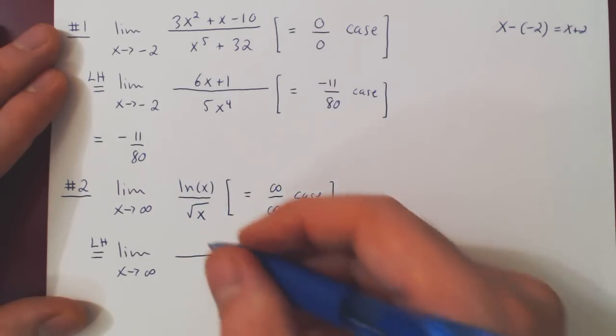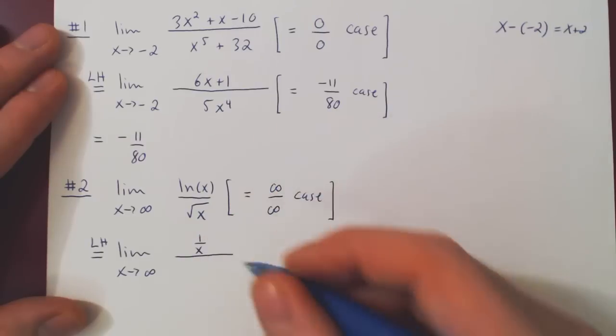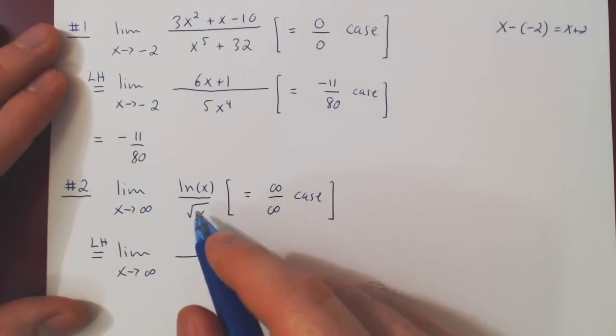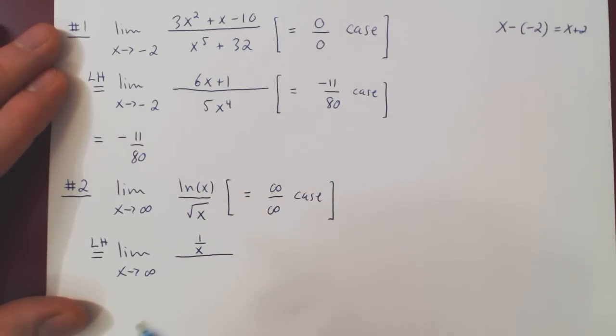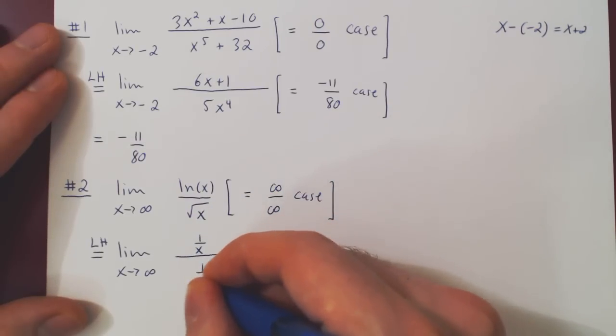The derivative of ln of x is 1 over x. If you write root of x as x to the 1 half and use the power rule, you'll find the derivative of 1 over 2 root of x.